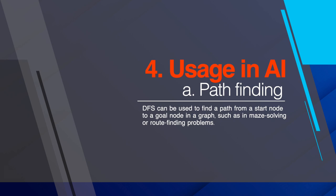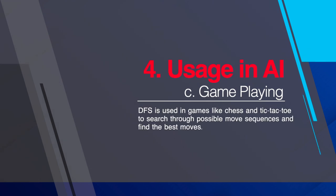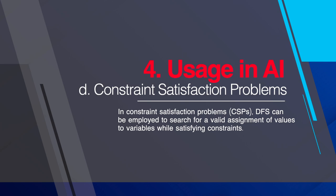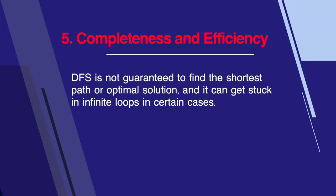Uses of DFS in AI: first, path finding — DFS can be used to find a path from a start state to a goal node in a graph, such as in maze solving or route-finding problems. Second, state space search — in AI planning and problem solving, DFS can explore the state space of a problem to find a solution by trying different actions and states. Third, game playing — DFS is used in games like chess and tic-tac-toe to search through possible move sequences and find the best moves. Fourth, constraint satisfaction problems — DFS can be employed to search for valid assignments of values to variables while satisfying constraints. Completeness and efficiency: DFS is not guaranteed to find the shortest path or optimal solution and can get stuck in infinite loops in certain cases.